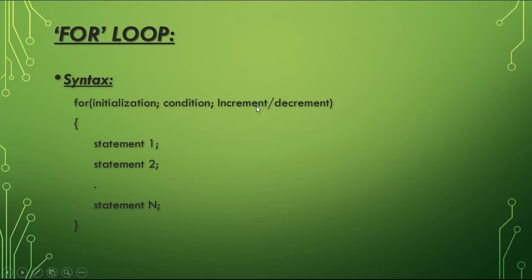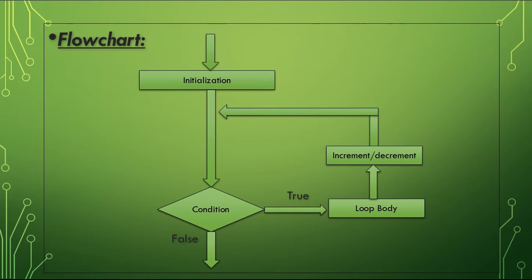The increment and decrement part specifies the change in the counter variable after each execution of the loop. To change many variables, each variable must be separated by a comma. The statements, also called the loop body, are the instructions that are executed when the condition is true.